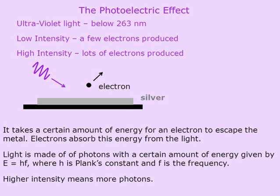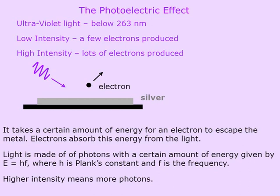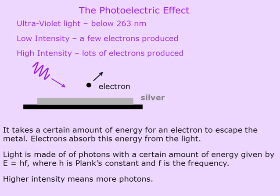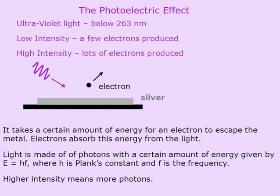We continue to reduce the wavelength of the light and go into the ultraviolet region of the spectrum. We find that there's a cutoff at 263 nanometers. If you have a wavelength below that, you get electrons coming out of the metal. At low intensity you'll get a few electrons, and at high intensity you'll get a lot. Even at 100 or 1,000 watts of red or green light you get nothing, but once you're below 263 nanometers, electrons appear.